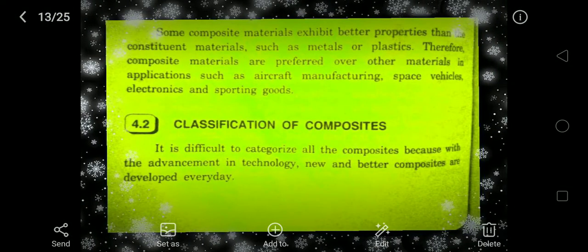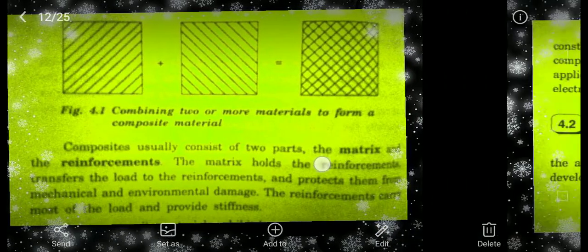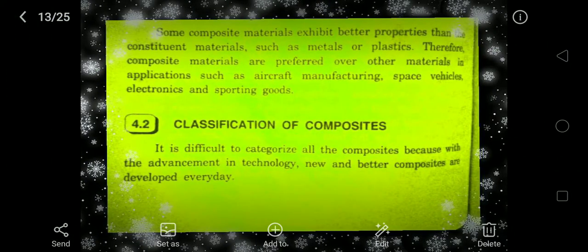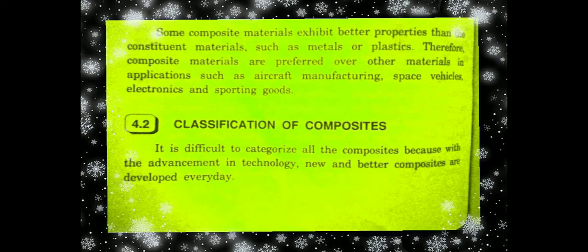Before looking at the classification, we have to understand why composite materials are preferred over other materials. In application fields such as aircraft manufacturing, space vehicles, electronics, and sporting goods, composites are much more preferable because they have very good strength — for example, five times greater strength than steel.